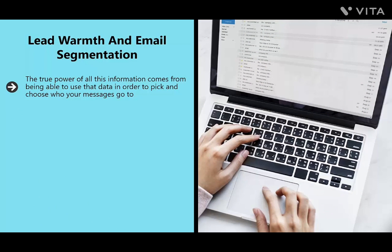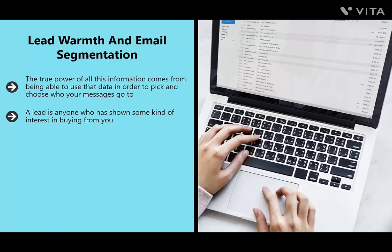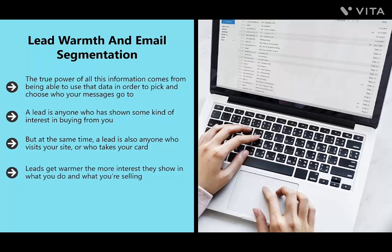The true power of this information comes from being able to pick and choose who your messages go to. What we're interested in is sending emails based on engagement, retention, and lead warmth. A lead is anyone who has shown some interest in buying from you. Anyone who visits your site is a cold lead; someone who gives you their contact details is a warm lead. Leads get warmer the more interest they show, and the warmer a lead, the more likely they are to buy. The true purpose of a mailing list is to take ice-cold leads and turn them into warm leads and then paying customers.